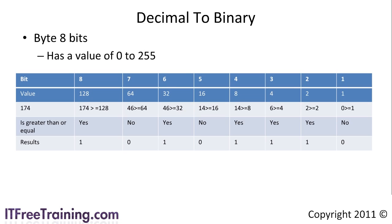This gives us a binary value of 10101110. Using this method you can quickly and easily convert any decimal number into a binary number.